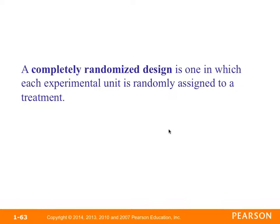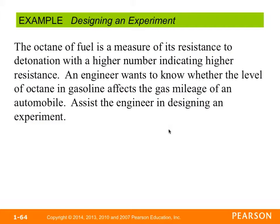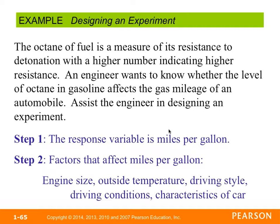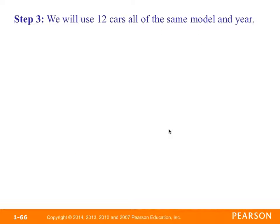A completely randomized design is one in which the experimental unit is randomly assigned to a treatment. An engineer wants to know whether the level of octane in gasoline affects the gas mileage of an automobile. Step one: the response variable is miles per gallon. Step two: factors that affect miles per gallon include engine size, outside temperature, driving style, driving conditions, and characteristics of the car. Step three: we'll use 12 cars, all the same model and year, to control for differences between cars.